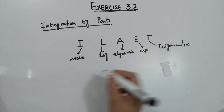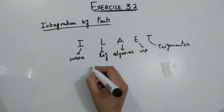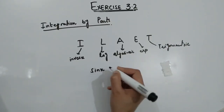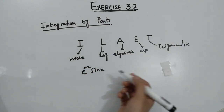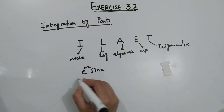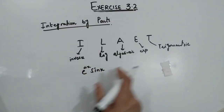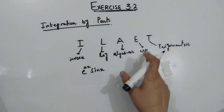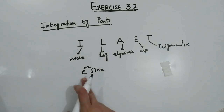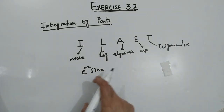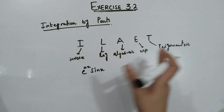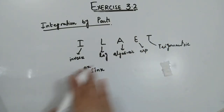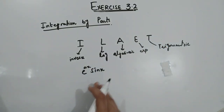For example, if you have e to the power ax times sin x, which function do you take as the first? Since Exponential comes before Trigonometric in ILATE, take exponential as the first function and sin x as the second. Using this ILATE formula, you can apply integration by parts. Question 5 is slightly different from the previous parts, so we take the integration of each component separately.